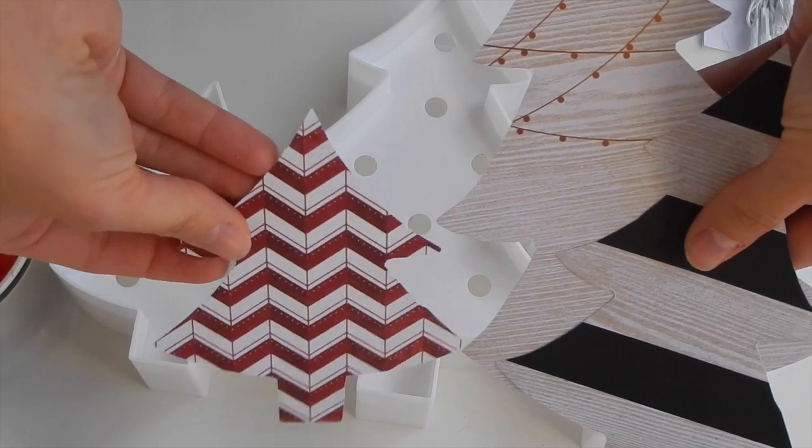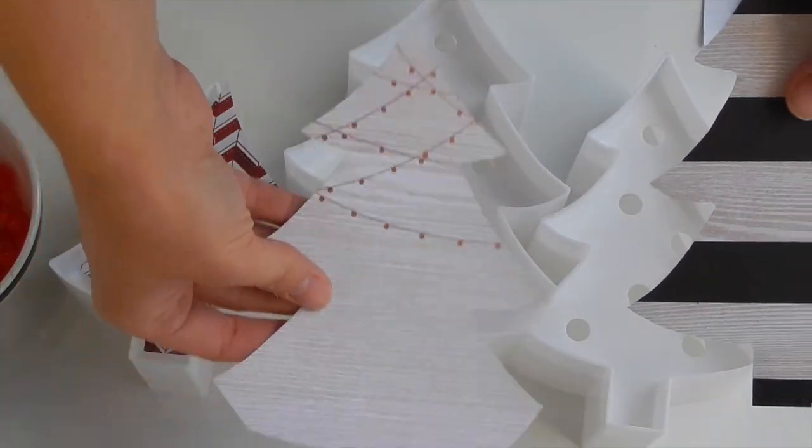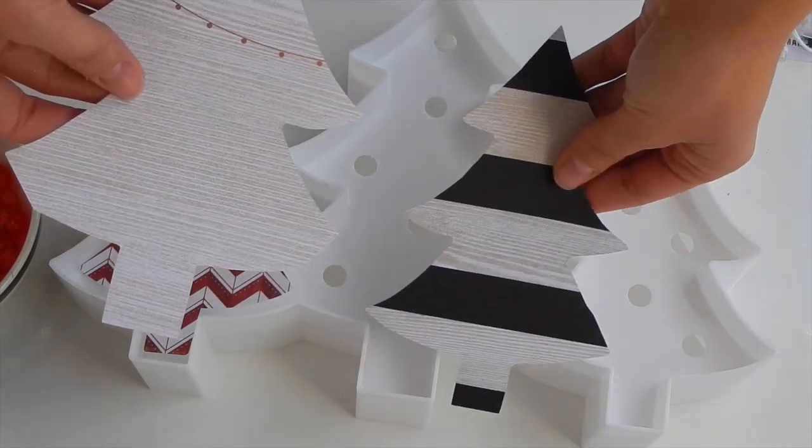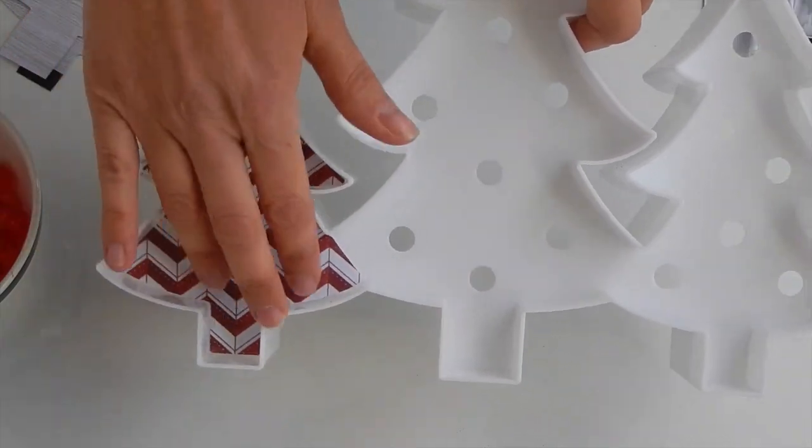I've got the red stripe, the black and white wood grain, and then the wood grain. These are all from the Oh What Fun Heidi Swapp 12 by 12 paper pad.